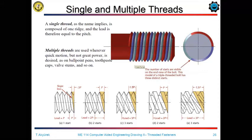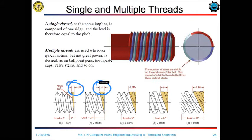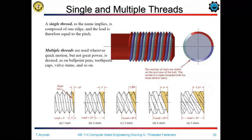We also increase the thread start quantities in fasteners in order to have a quick movement during power transmission or coupling of an element. Especially for the cap of PET bottles, this principle is mostly used — you can easily open or close these bottles within half a turn using this multiple start thread principle. When we have more than one start of thread, we multiply the movement of a full turn by the number of multiple thread starts. However, multiple threads also weaken the strength of the bolt.